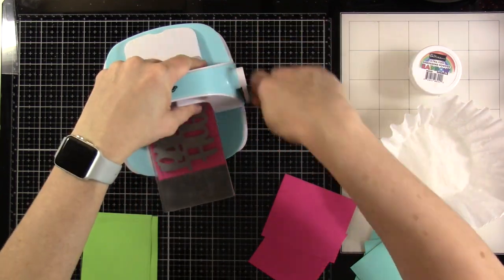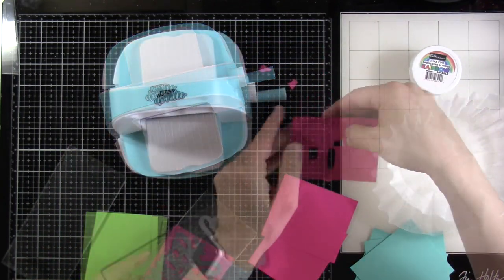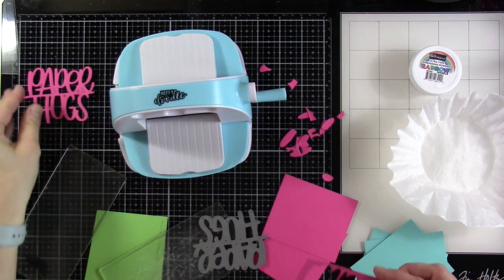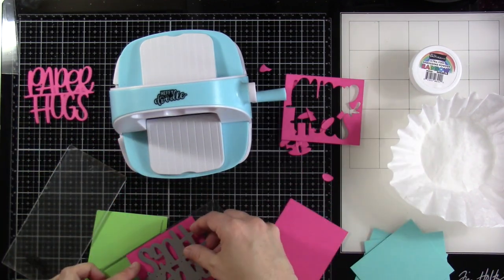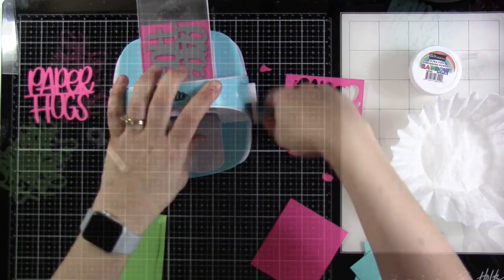All right. The next thing I want to do is die cut paper hugs. I have three different colors of cardstock that I've chosen, and I've got three pieces of each of those colors. So that way I can have almost like a chipboard feel. So I'm going to cut that out basically nine times, and then I'll have those all stacked and ready to go to start assembling.